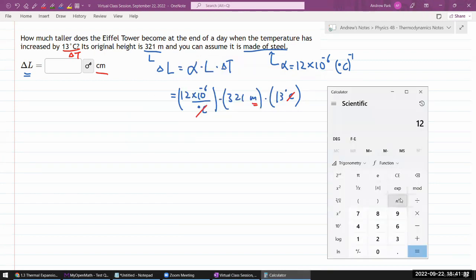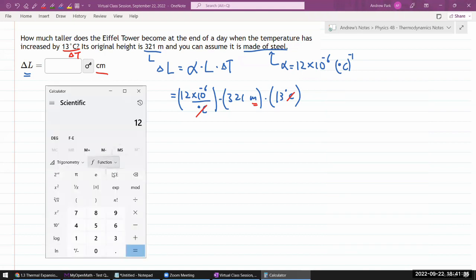So 12, I know this calculator well enough to do the power of 10 thing. I think it's this one, E notation. So this means 12 times 10 to the power of minus 6, that number, times 321, times 13. Is equal to this many meters. To convert it to centimeters, I can multiply that by 100. So 5 centimeters.